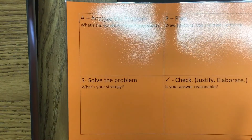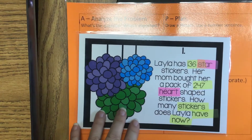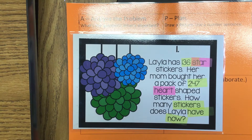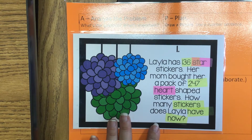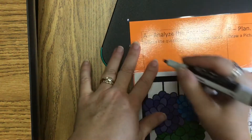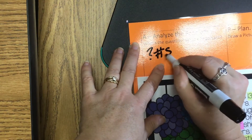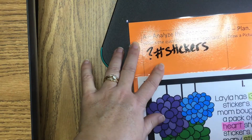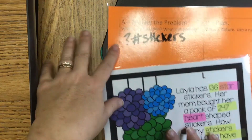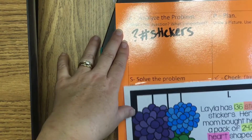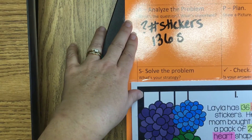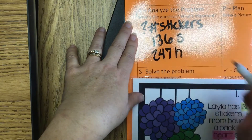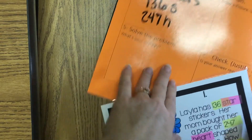What does this look like in real life? I have a problem here and I've highlighted the important parts. Layla has 136 star stickers. Her mom bought her a pack of 247 heart-shaped stickers. How many stickers does Layla have now? The question is 'how many stickers?' — so that's what I'm writing down, like a text message. I know 136 are star stickers, so I'm writing an S for star. And 247 are heart stickers, so I'm writing an H for heart.